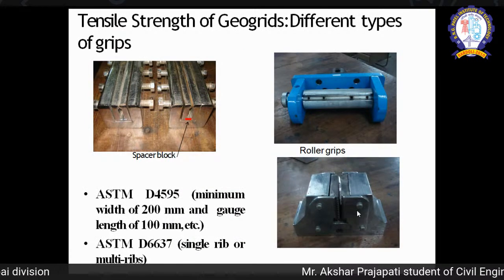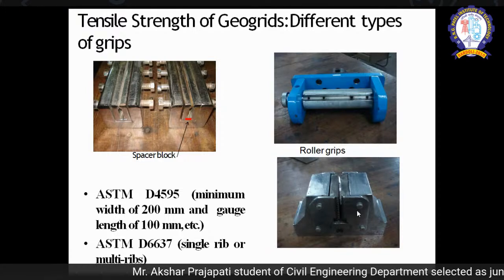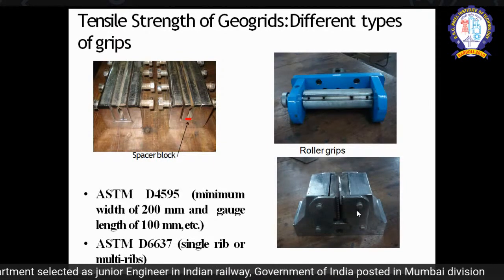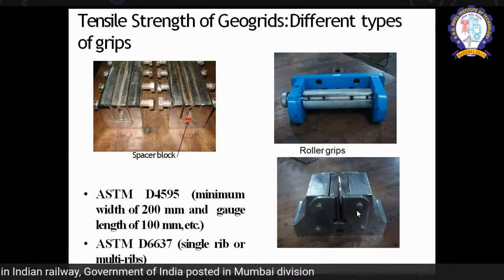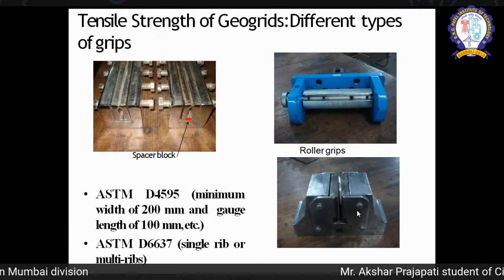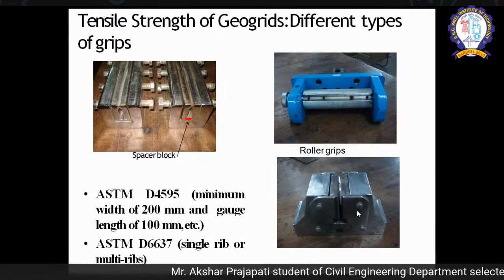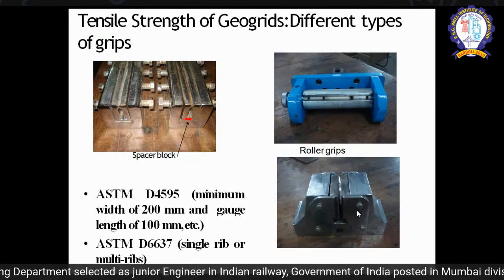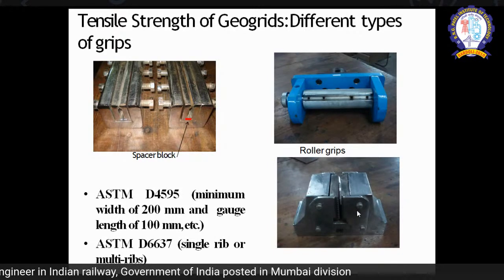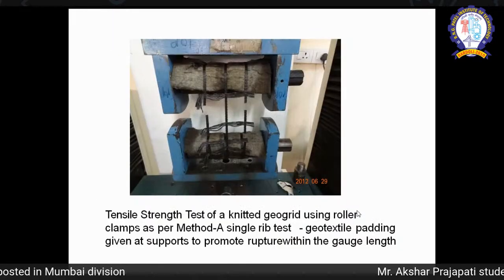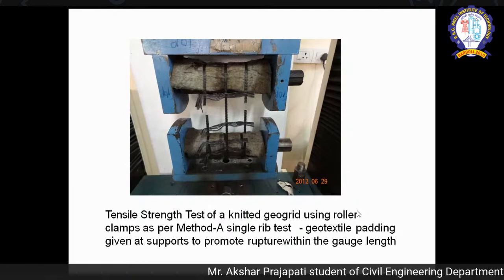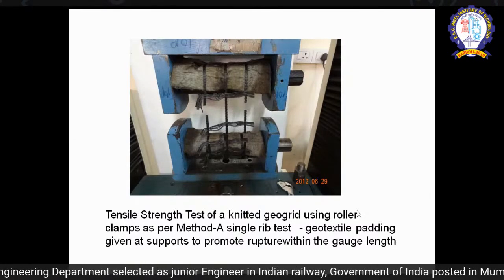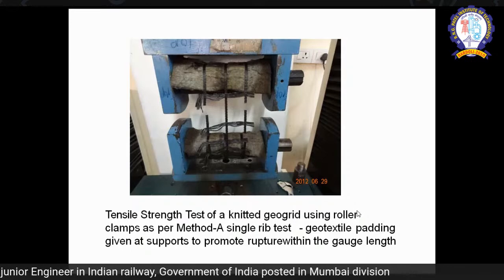These are the different kinds of grips used to test the geogrid. We have to test the material, not just use values from IS codes and make a report. Testing is very important and we should know how to use the machine. These are the different grips used to perform tensile strength tests on geogrid per ASTM standards. The geogrid is supported at two different rollers — at the top and at the bottom — and stretched until it breaks.